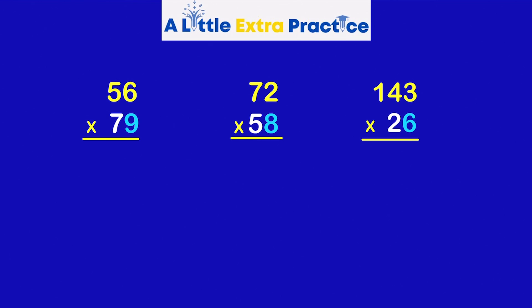56 times 79. My first focus is on the 9 in the ones place. 9 times 6 is 54. Write the 4. Carry the number in the tens or the 5.